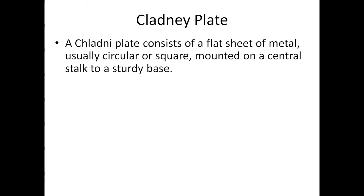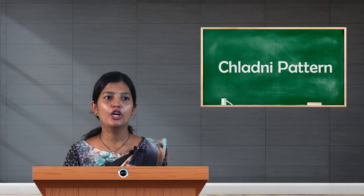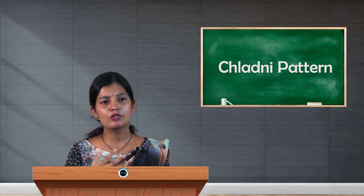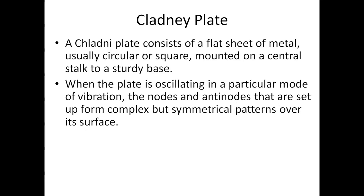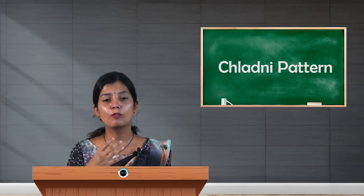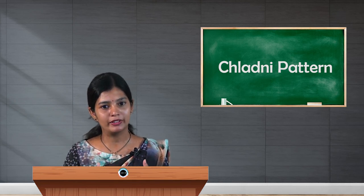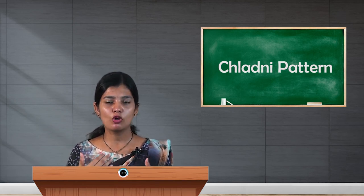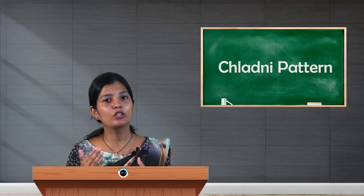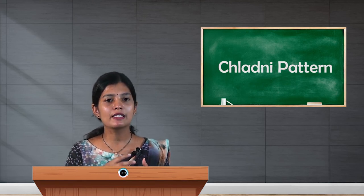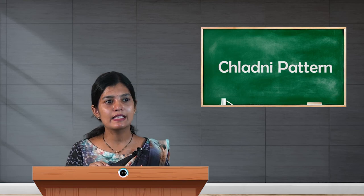A Chladni plate consists of a flat sheet of metal, usually circular or square, mounted on a central stalk to a sturdy base. When the plate oscillates in a particular mode of vibration, the nodes and antinodes set up complex but symmetrical patterns over the surface of the plate.